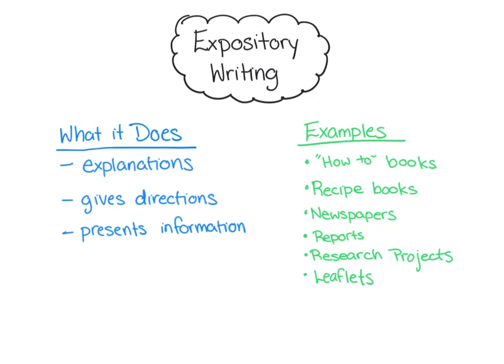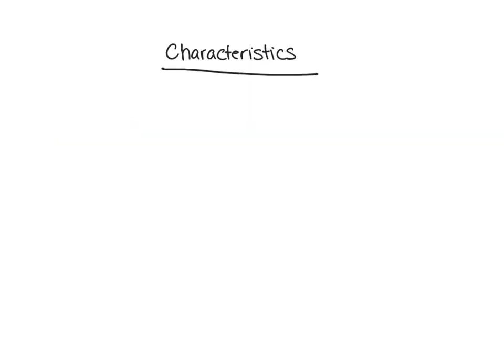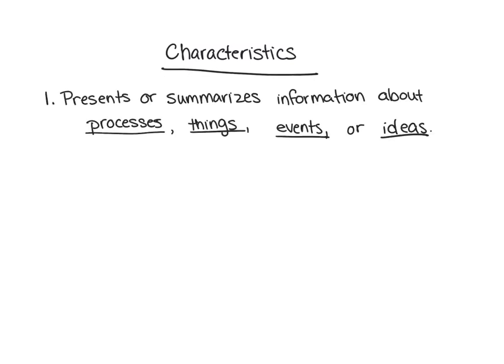You actually do quite a bit of expository writing for school. There are three main characteristics of expository writing. The first characteristic is that it presents or summarizes information about processes, things, events, or ideas. We'll talk more about what these four things are as we look at the first question in Part A.